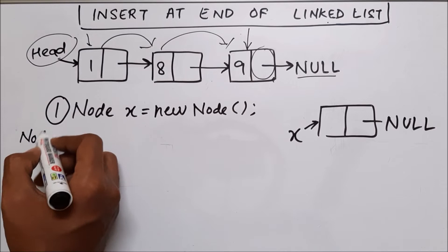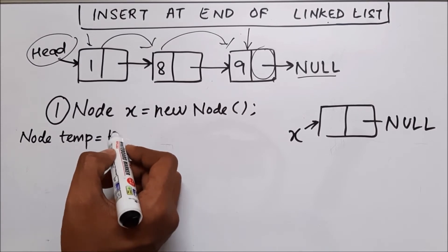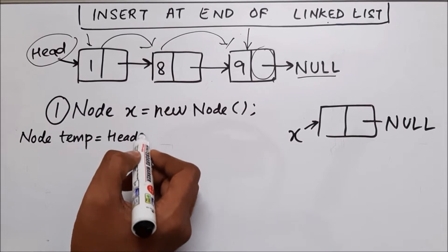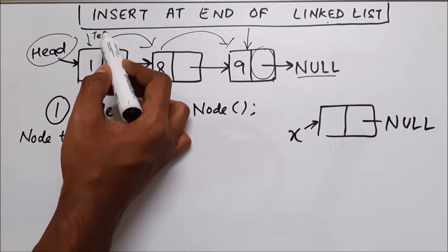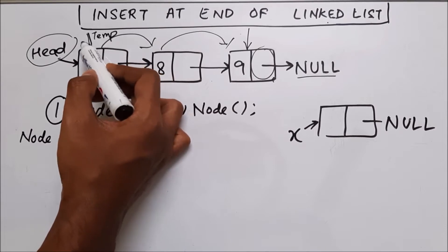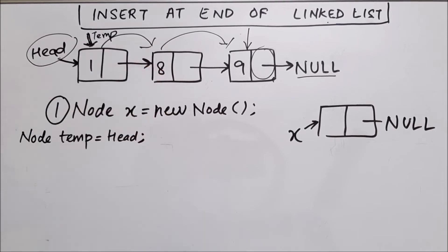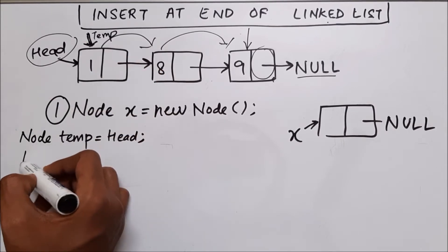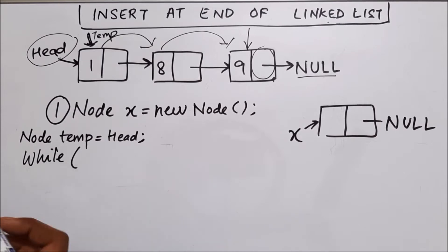So let's say we have a node temp and it will start from head. So now we have a temp which is pointing to the same node which head is pointing. So it is also pointing to this node. Now we'll use a while loop. What will be the terminating condition?